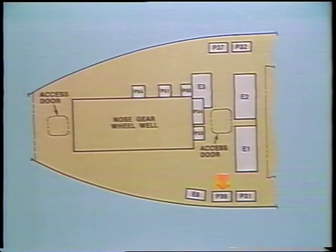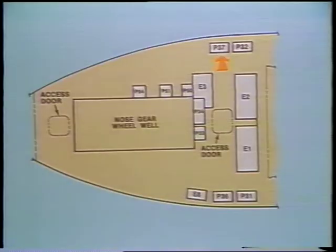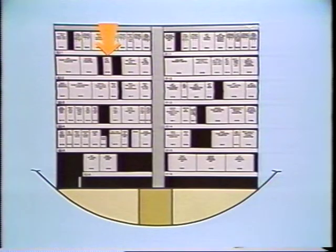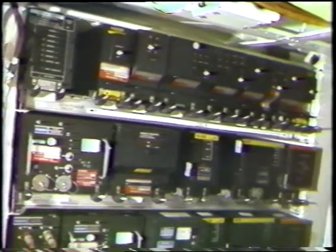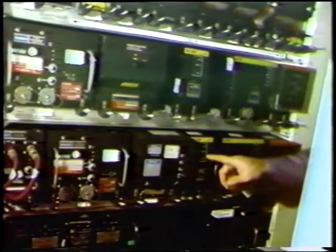The VOR antenna is located under the vertical stabilizer fin cap. The air ground relay K124 is located in the left miscellaneous electronic equipment panel P36, and the right air ground relay K214 is in the right miscellaneous electronic equipment panel P37, both in the main equipment center. Also in the main equipment center are the left VOR receiver in rack E2-2 and the right VOR receiver in rack E2-3.